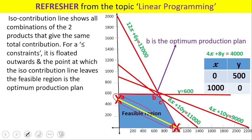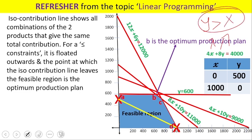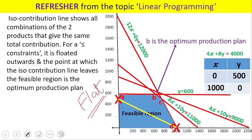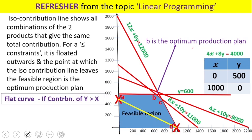Regarding the slant of the iso-contribution line: here the contribution of X is $4 and the contribution of Y is $8, so Y's contribution is greater. The line is flat — it has moved farther from the origin on the x-axis than on the y-axis. A flat iso-contribution line means the contribution of Y is greater than that of X.